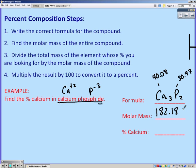Step 3 says divide the total mass of the element whose percent you were looking for by the molar mass of the compound. We're trying to find the percent calcium, so how much of that 182.18 was due to calcium?